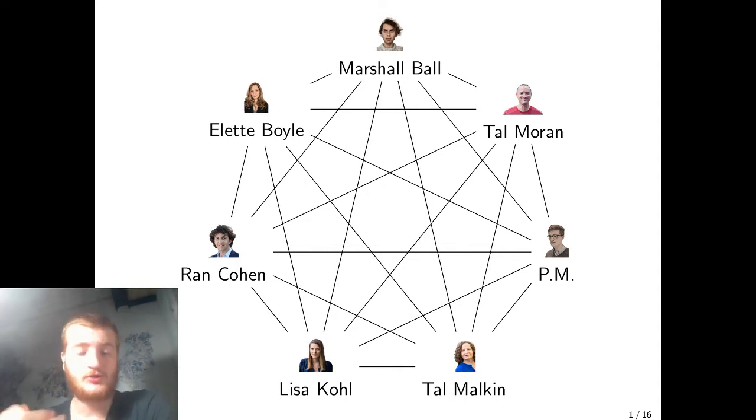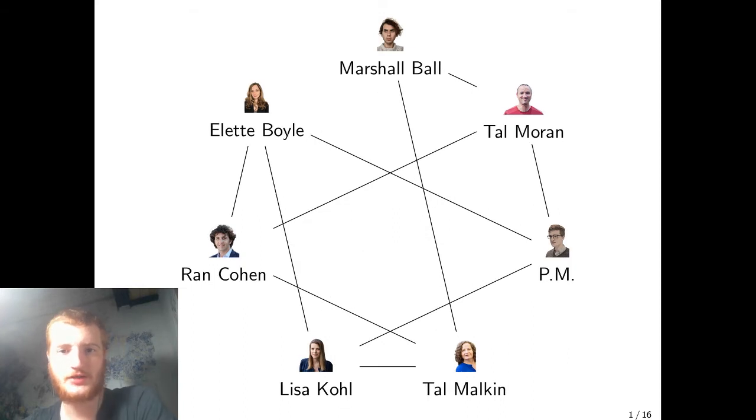As you can see, the communication graph where each edge represents a secure point-to-point channel is a complete one. However, in most real-world peer-to-peer networks, it won't be the case. It will actually be an incomplete network. To make matters worse, the structure of the network will often reveal sensitive information the parties would rather keep private. For instance, if I get to know who's talking to who, I may learn such things as geographic proximity between participants, friendship relations, absence of friendship, or I could learn about some back-channeling I wasn't supposed to know about.